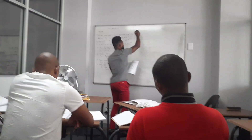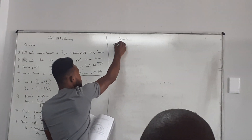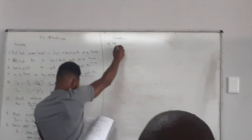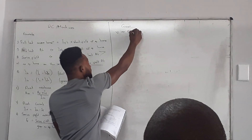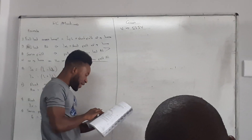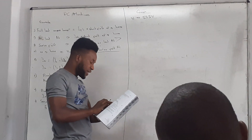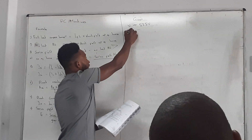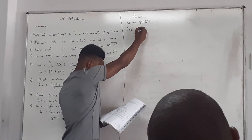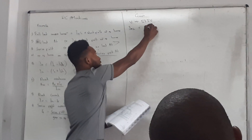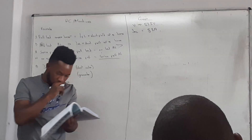Let us write the given information. They give us the voltage of 525 volts. They also give us the current at no load, which is I_no_load of 5.3 amps.